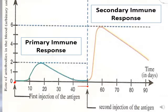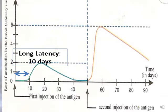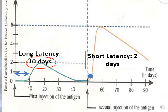Latency is the time needed for the immune response to start. In the primary immune response, the latency is about 10 days. In the secondary immune response, it takes only two to three days to start. So the secondary immune response is faster.